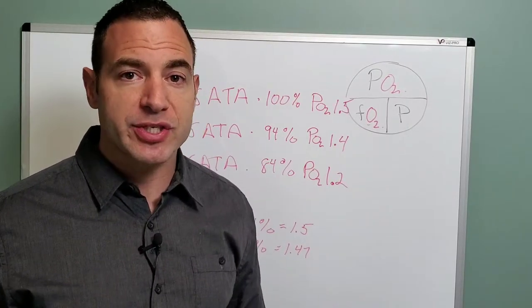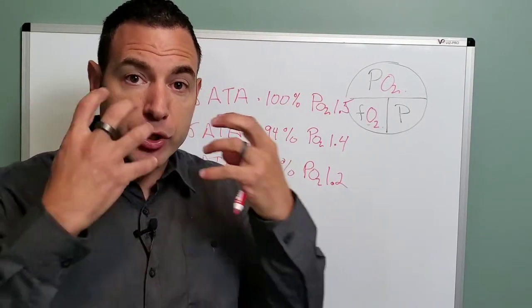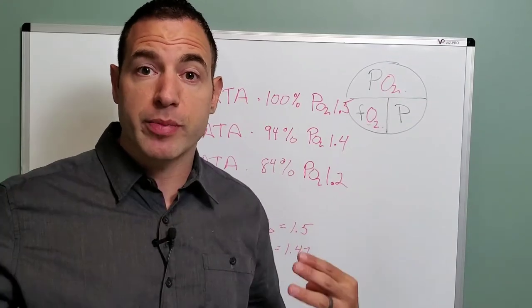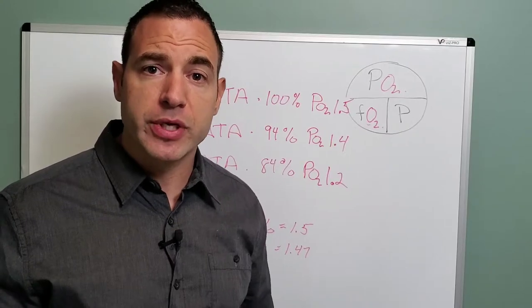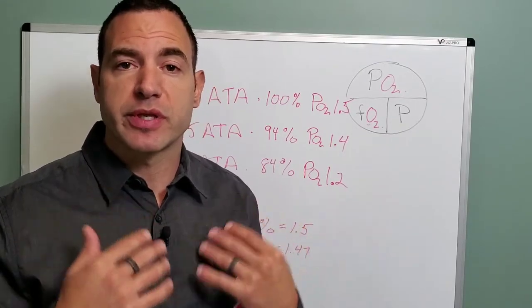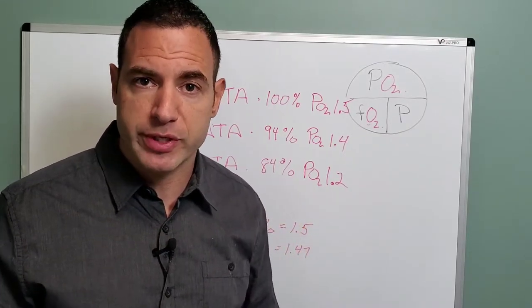Some pretty subtle changes inside the environment, the equipment that you're using for breathing, the equipment that you're using for a chamber, they all make a difference. And they all change the gradient, which means that they all change the amount of absorption the patient's going to have.